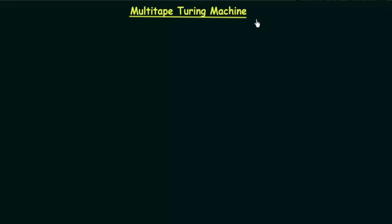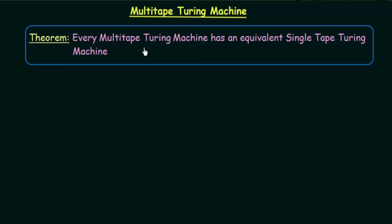Here we have a theorem which says: every multi-tape Turing machine has an equivalent single-tape Turing machine. Equivalent means that this single-tape Turing machine will be able to perform the exact same task, or can recognize exactly the same language that is recognized by the multi-tape Turing machine. We are not talking about the speed or ease of computation here.